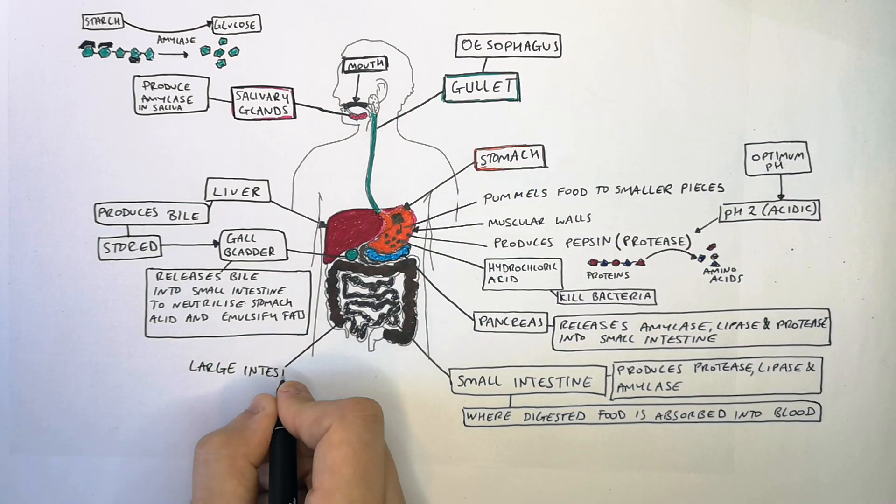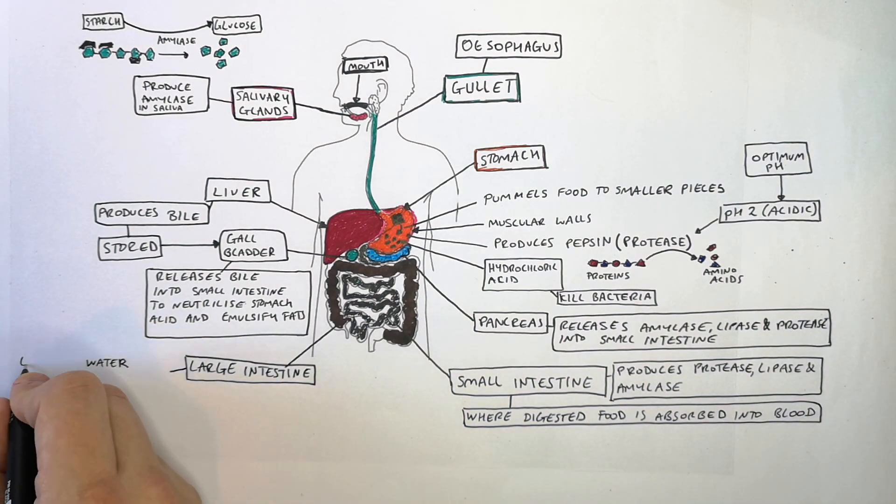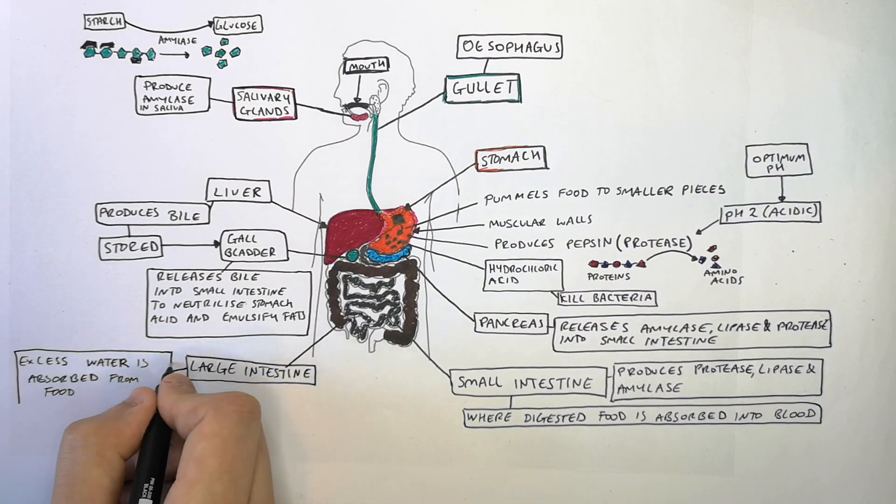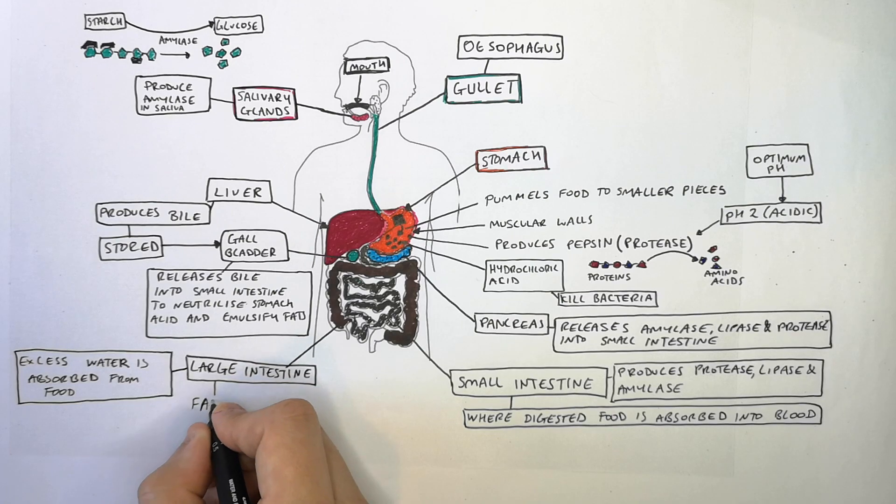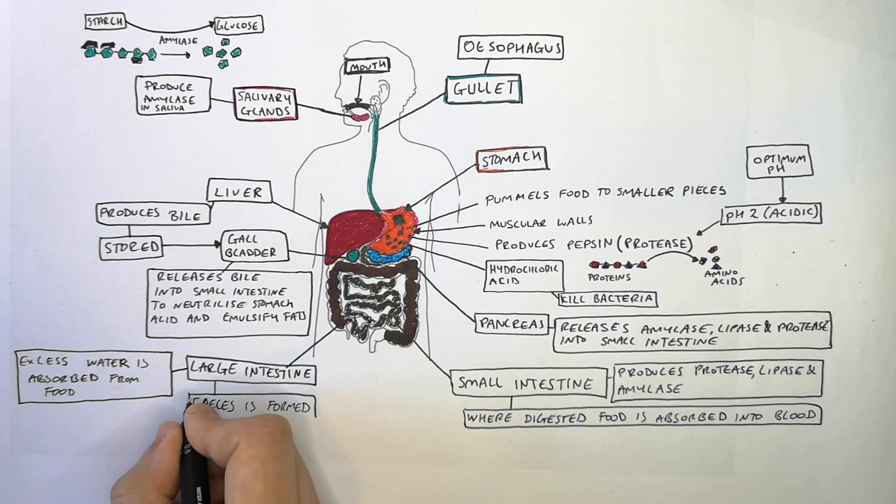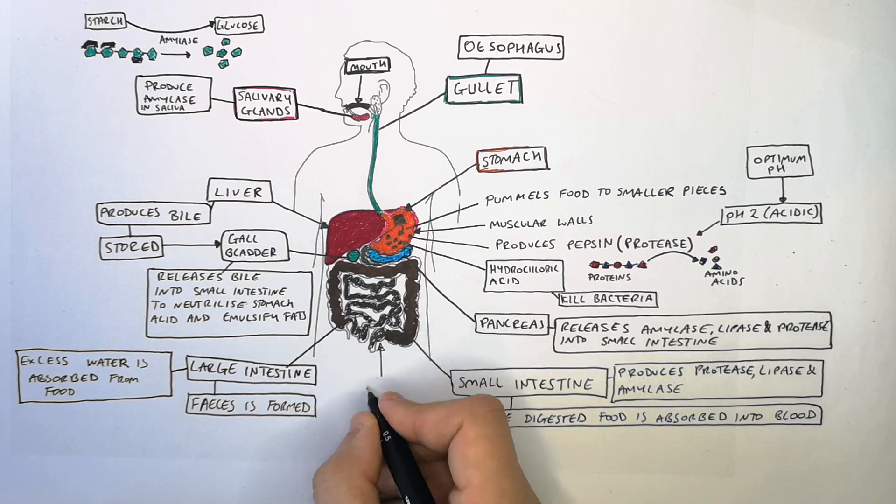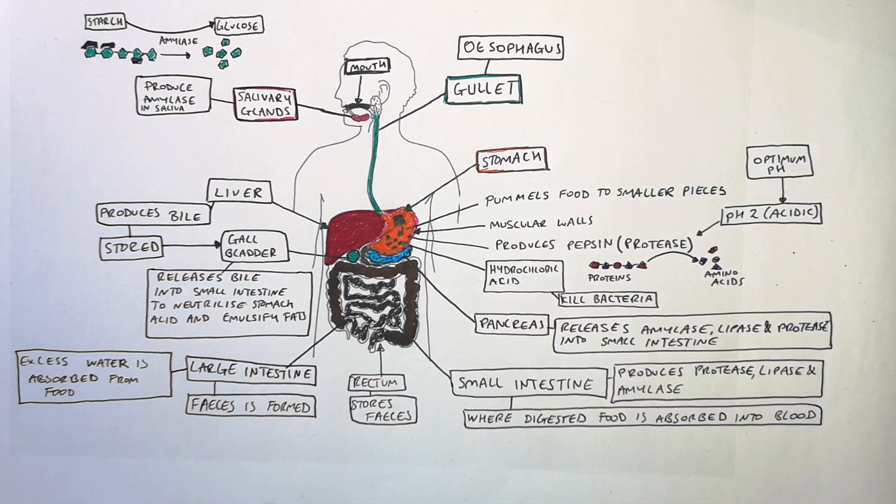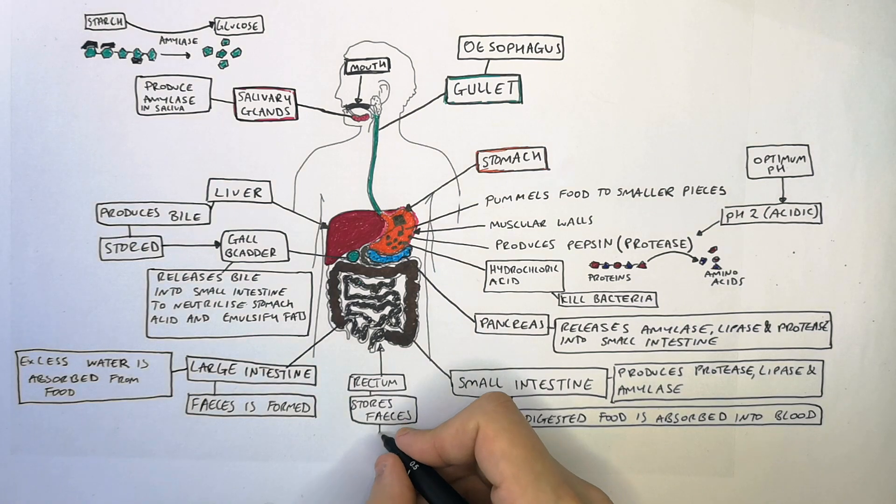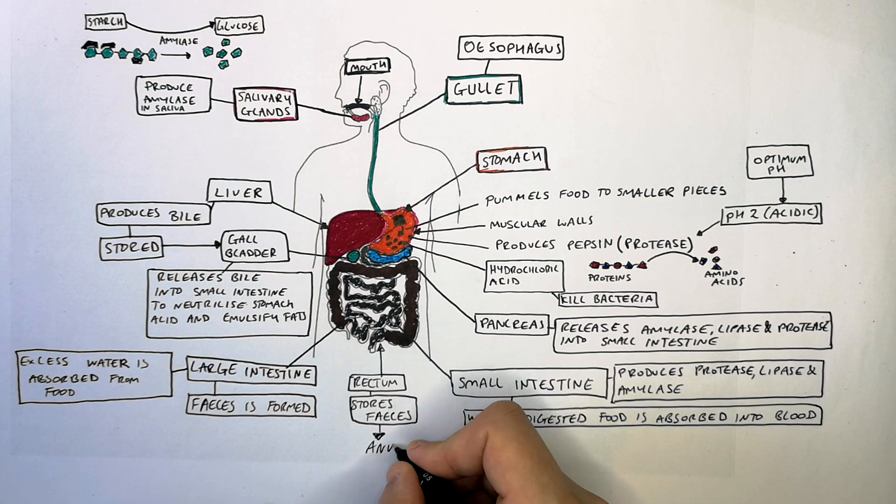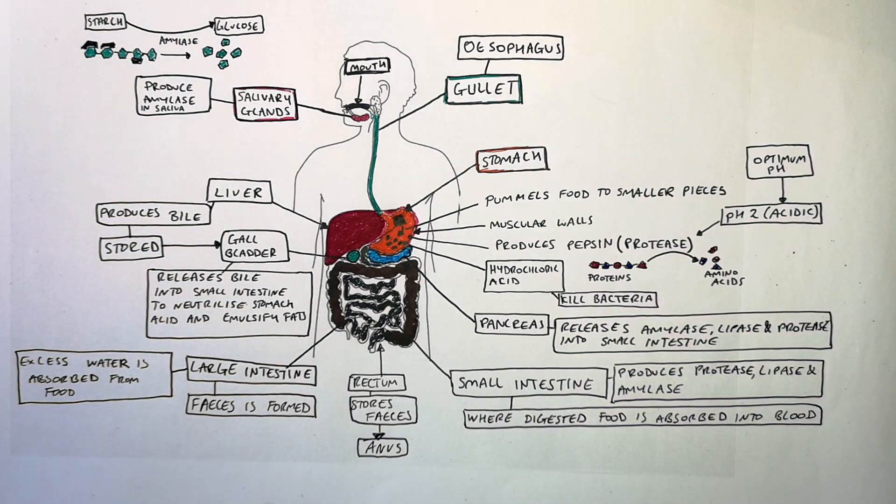The large intestine is where excess water is absorbed from our food. The large intestine is also where feces is formed. Feces formed in the large intestine is stored in the rectum. When we need to excrete the feces, it exits our body via the anus.